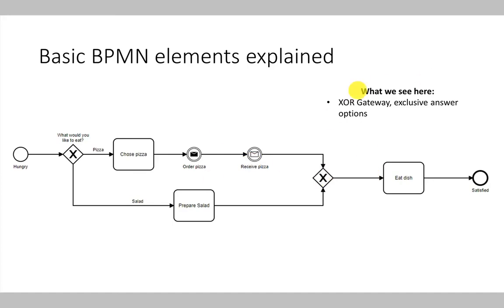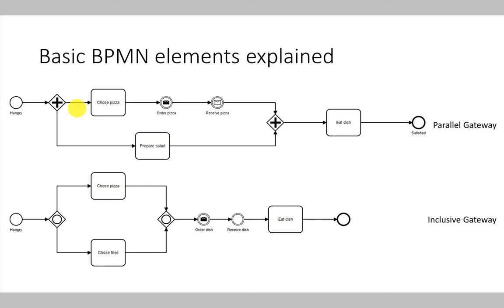There are also different types of gateways besides the XOR gateway — for example, the parallel and the inclusive OR gateway. The parallel gateway is marked with a little plus sign. It executes the process so that both process paths are executed in parallel. When the process arrives at the parallel split gateway, it is split into two parallel paths: we in parallel choose a pizza, order it, and receive it, while also preparing a salad. Once both process paths are finished, they are joined together and we can eat our dish consisting of a pizza and a salad.